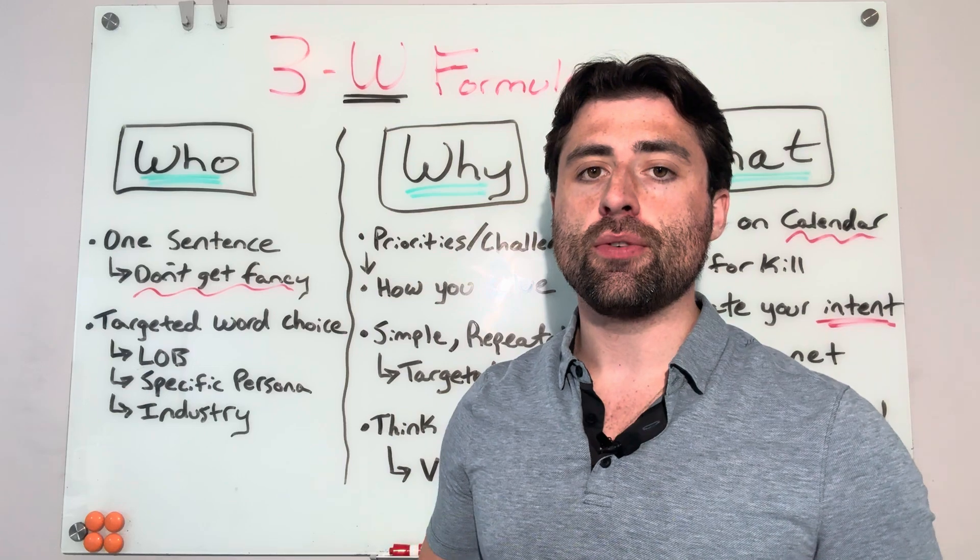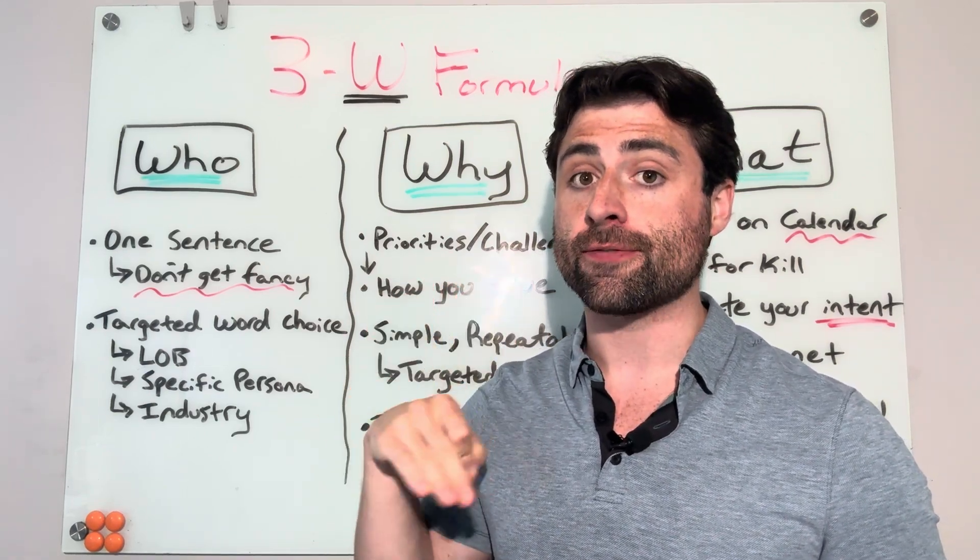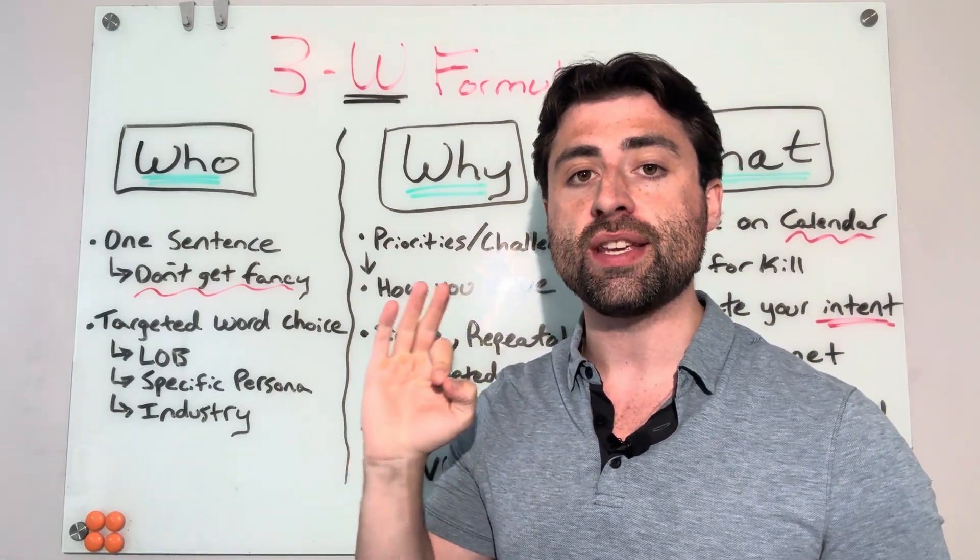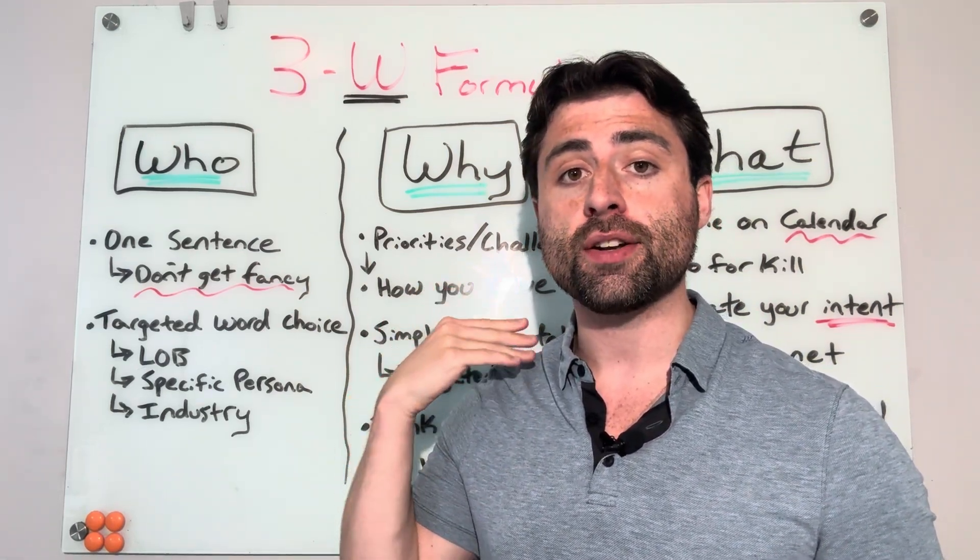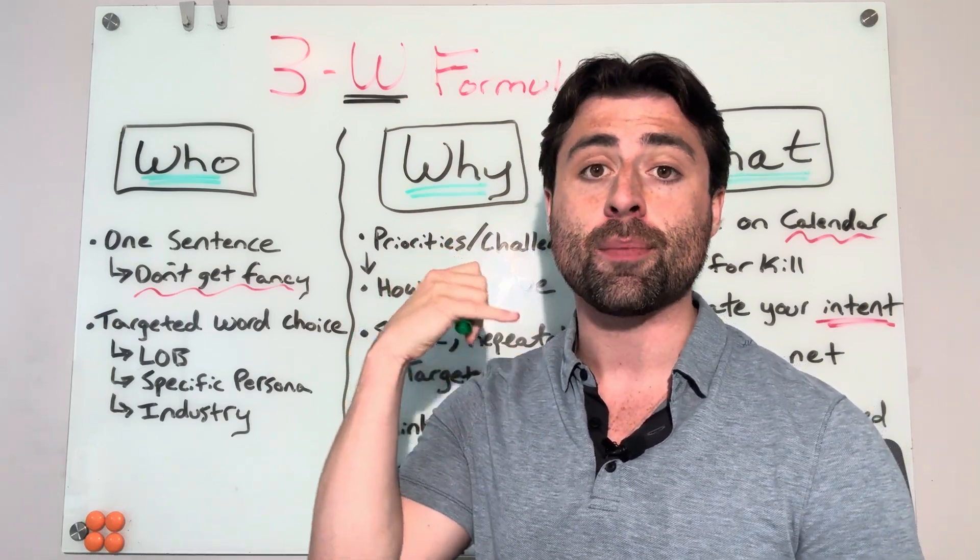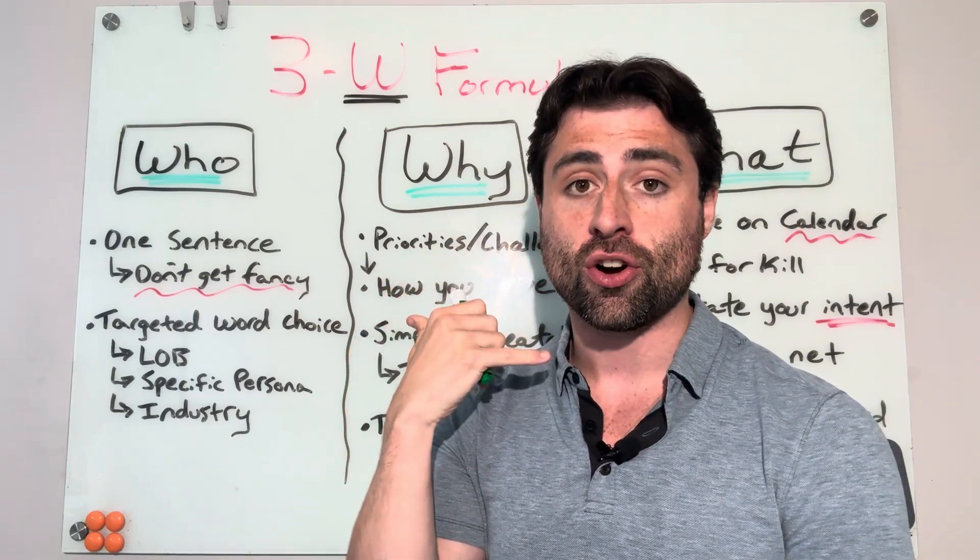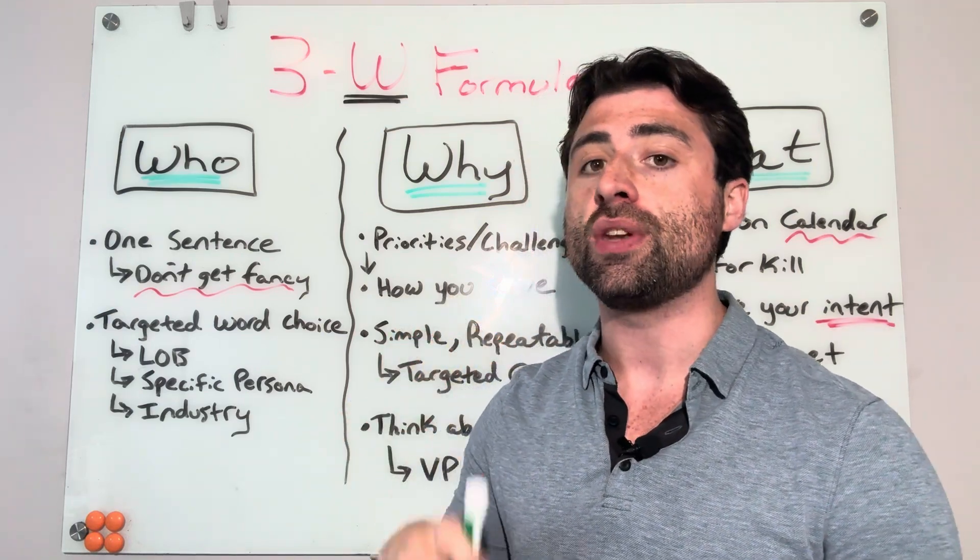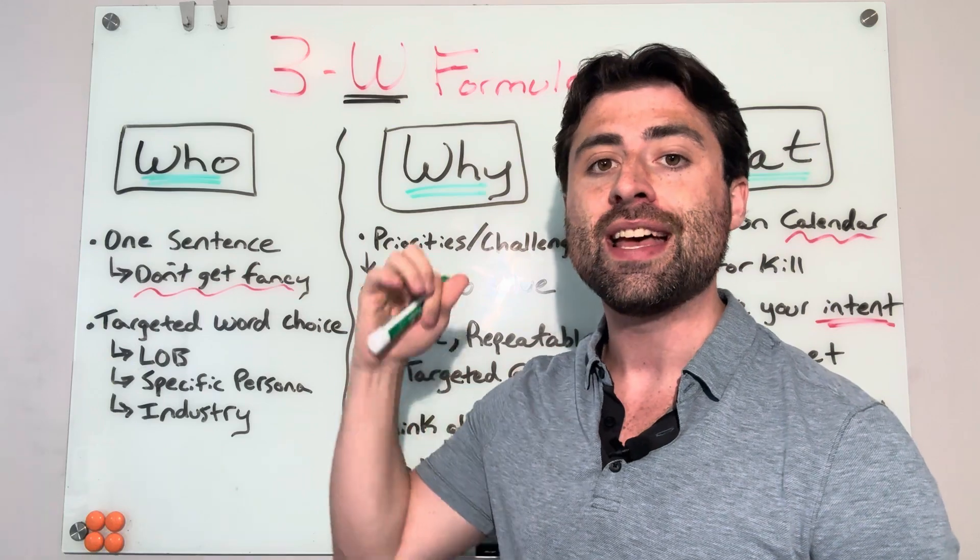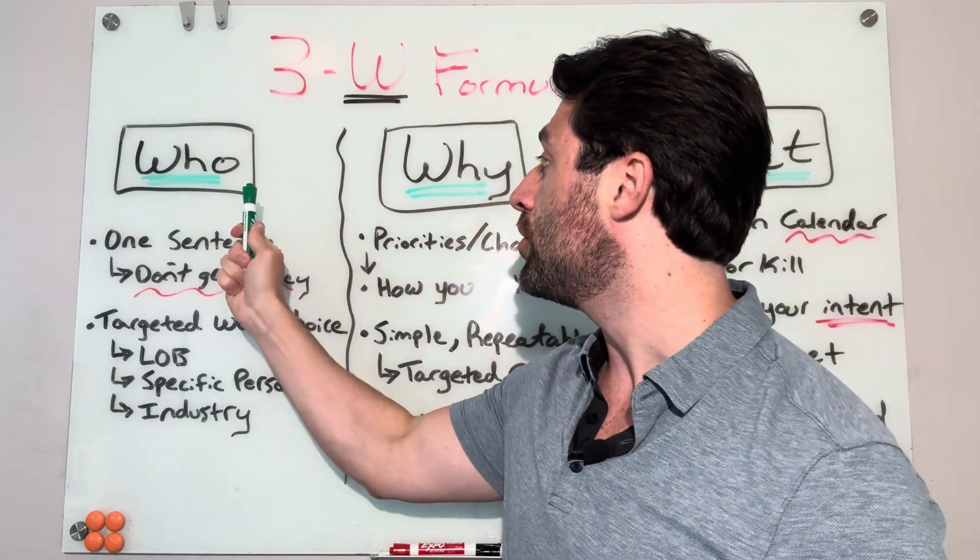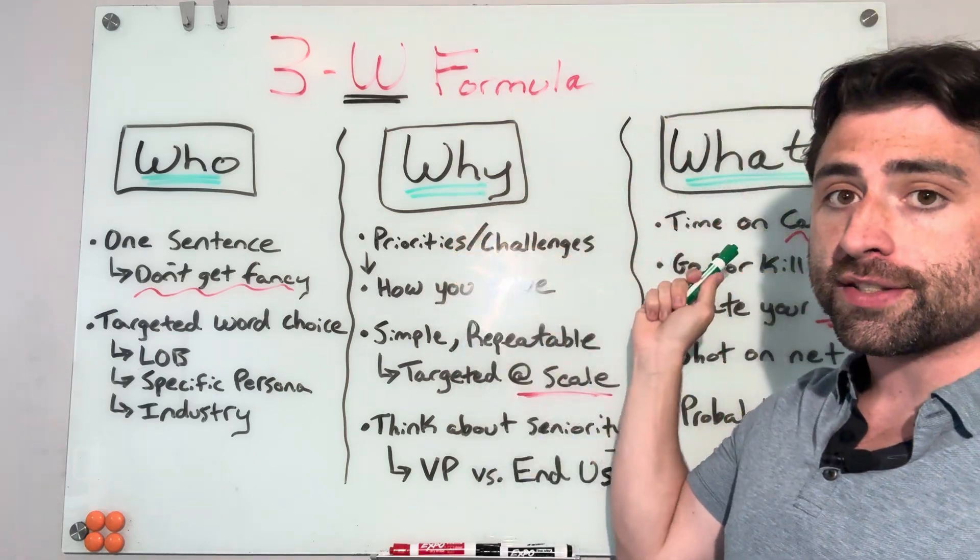So the 3W formula involves answering three questions for the prospect within 30 seconds of the cold call. These are the three questions that whether they realize it or not, they are subconsciously wondering in their head when you call them. They answer, they realize this was not a call I was expecting. I don't know this person. I'm busy in the middle of my workday. You need to answer three key questions to get them to drop their defensive guard. And those questions are who you are, why you're calling, and what you want.